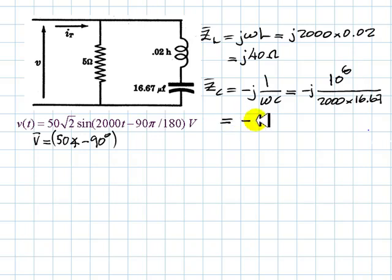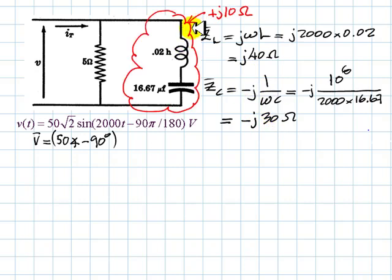That impedance is negative j 30 ohms. I put in series those two impedances, and we get plus j 40 minus j 30, that is plus j 10. That is the impedance of all this branch, plus j 10.